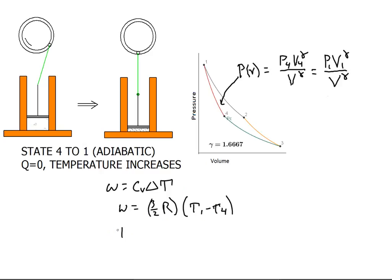Since T1 is greater than T4, work for this step will be positive, and it will always exactly cancel the negative work of process 2.